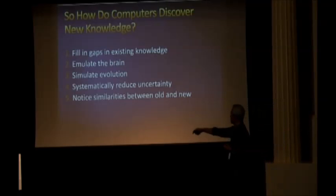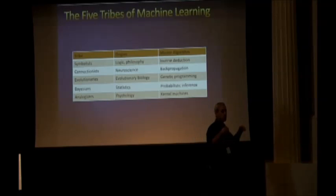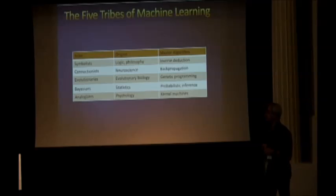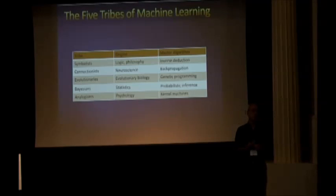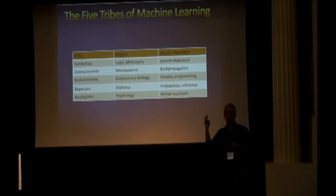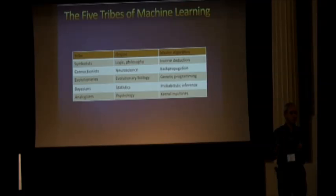So these are the five main ideas, and associated with them there are five major schools of thought in machine learning — whole research areas with thousands of people working in each one of these paradigms. The first one is the symbolists, in some ways the oldest one, with roots in logic, philosophy, and mathematics. Each of these tribes has its own master algorithm — a general purpose learner that can in principle be used to learn anything from data. The research question I and others have been working on is how we can combine them into one algorithm that really is the master algorithm.